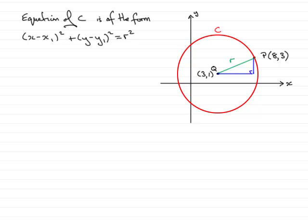And we should know that r squared equals the difference between the x values squared, plus the difference between the y values squared. So that's going to be 8 take away 3 all squared, plus 3 minus 1 all squared.